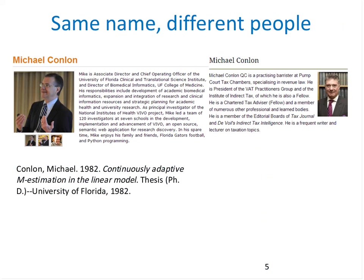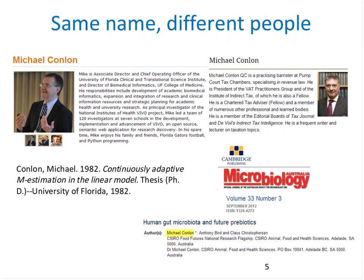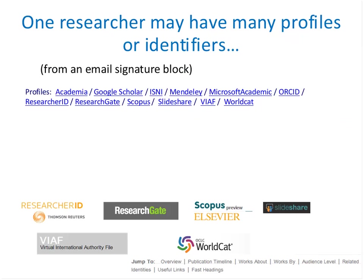Michael Conlon is a member of our task group, an expert in biomedical informatics at the University of Florida. There is another Michael Conlon in the UK who writes articles on European taxes — obviously two different people. Then there is an article on microbiota in the Australian journal Microbiology, also written by a Michael Conlon. Without other metadata, it is difficult to tell whether it is the same as the University of Florida one or a different one based in Australia. It turns out it is yet another Michael Conlon, and Michael Conlon says there are several others in his field.